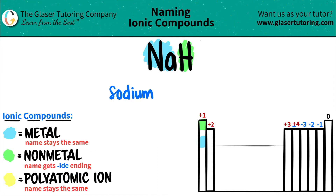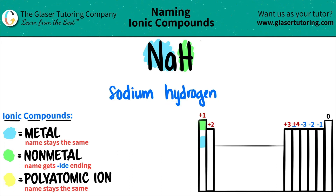The nonmetal always gets the IDE ending. So this was hydrogen. I have to turn this into an IDE ending — it would be hydride. So you get rid of the O-G-E-N and you put hydride. There's the IDE.